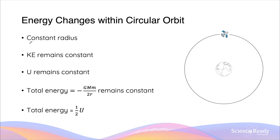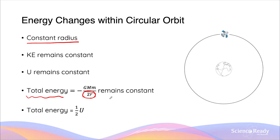Within the circular orbit, we have a constant radius — the orbital radius of the object remains the same throughout its orbit. This means the kinetic energy and the gravitational potential energy, as both depend on the orbital radius, will both remain constant throughout the circular orbit. The total energy, given by minus GMm over 2r, is also dependent on the radius, so if the radius remains constant, the total energy also remains constant.